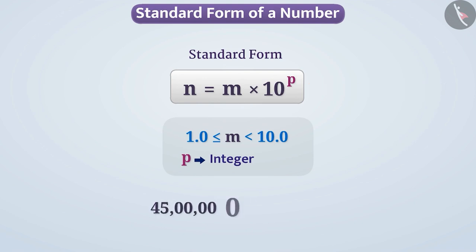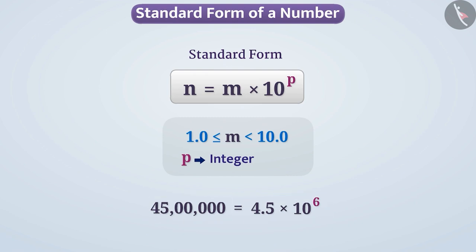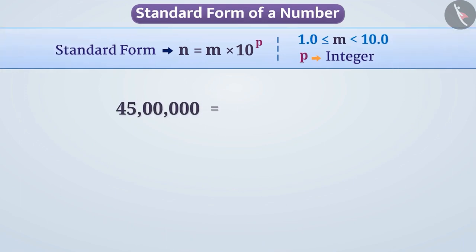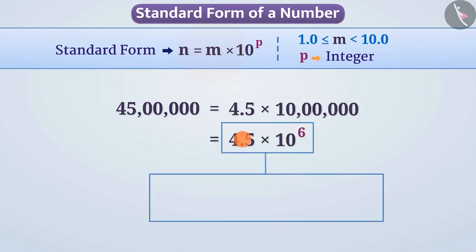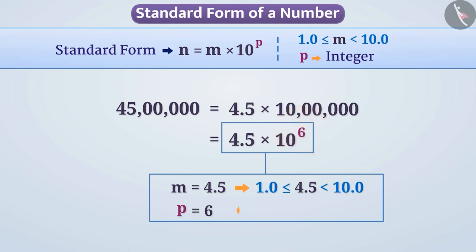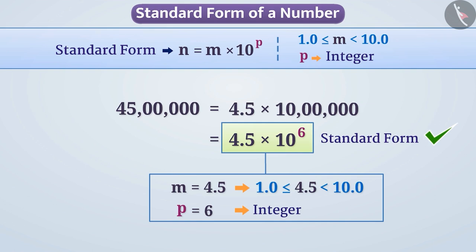For example, we can write this number as 4.5 into 10 to the power of 6 in standard form. We can represent this number as 4.5 into 10 lakh, and write it in exponent form as follows. We see that the value of m is 4.5, which is greater than 1.0 and less than 10.0. Similarly, the value of p is 6, which is an integer. So this is how we identify the standard form of this number.